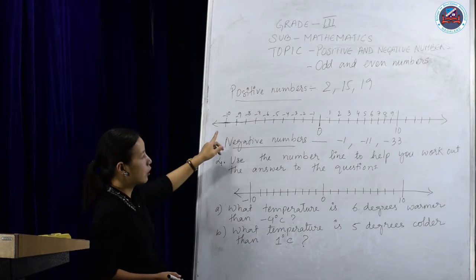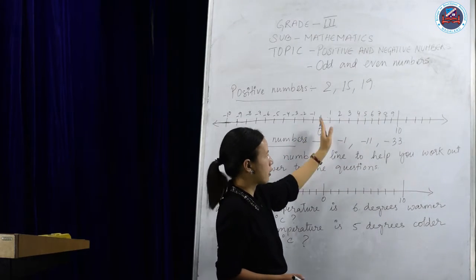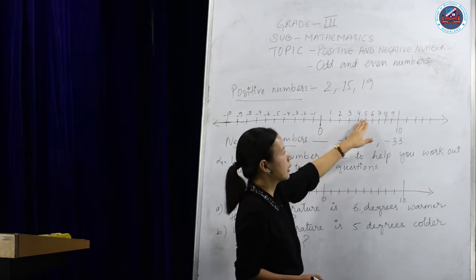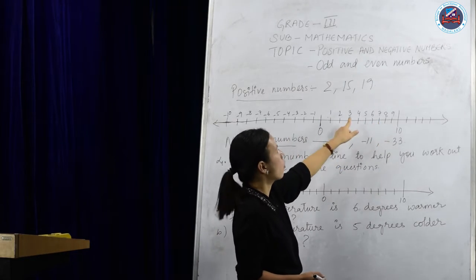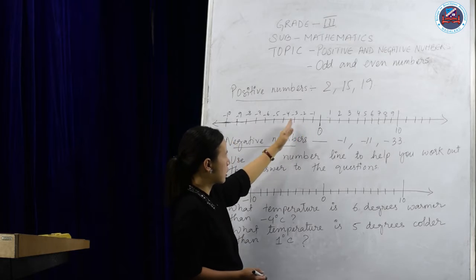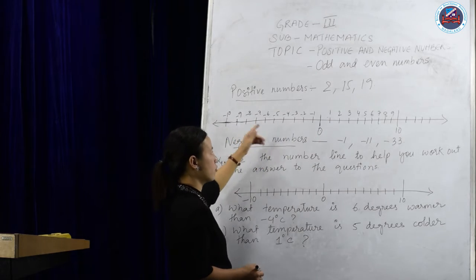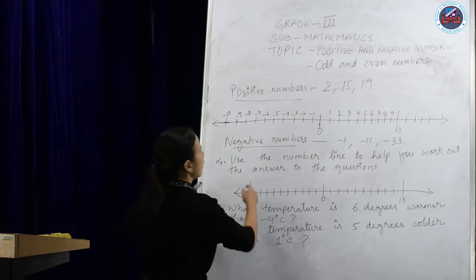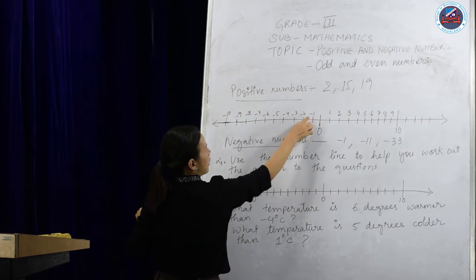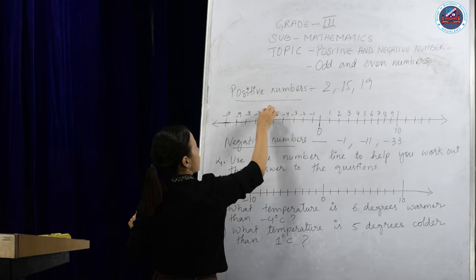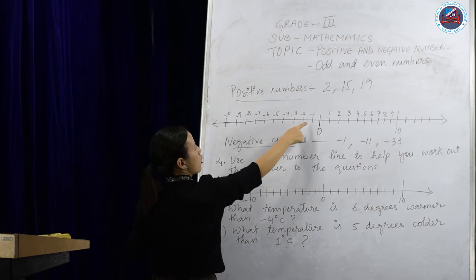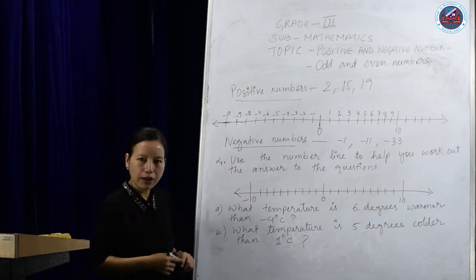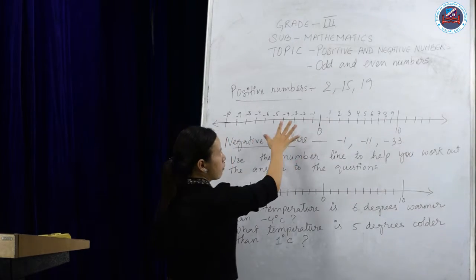When we look at the scale, as the scale goes up — that is, above zero — the bigger the number, the more the value it is. But as the scale goes down, that is, below zero, as the number goes up — 1, 2, 3, 4, 5, 6, 7, 8, 9 — so as the numbers go down on the negative side, the bigger the number, the lesser will be the value.